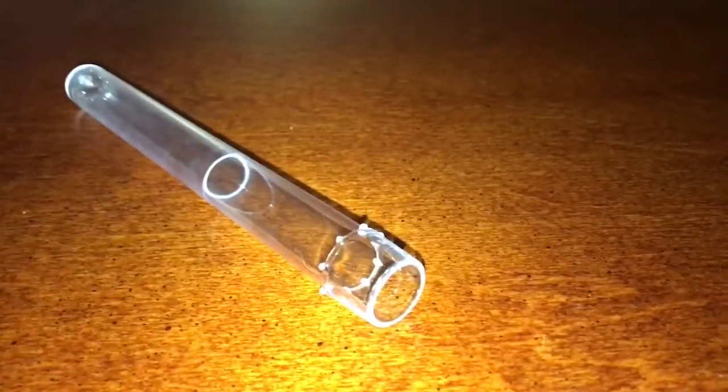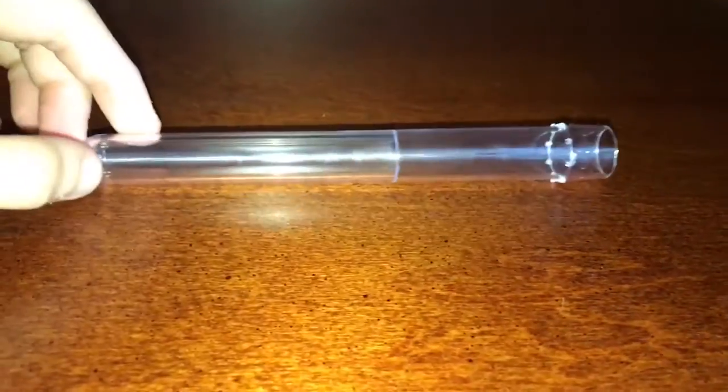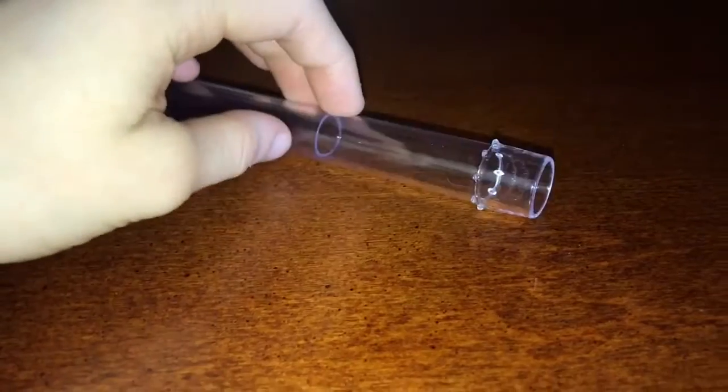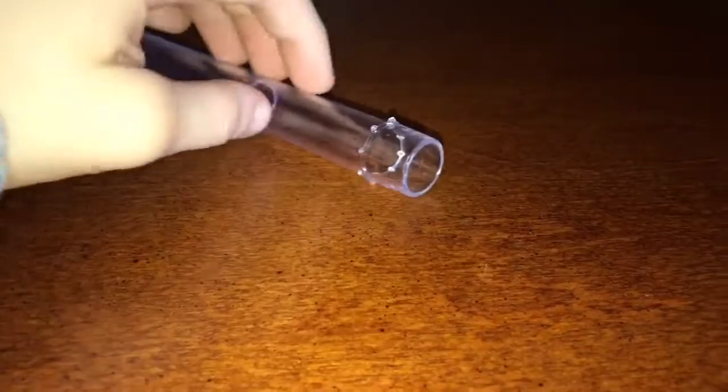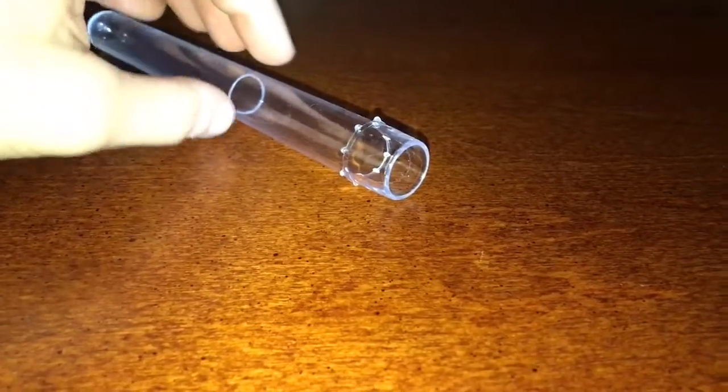The next item is the AC test tube. So, the new ones now have two things. This nice little line to tell you pretty much where to fill the water up to. As well as these things, so that it doesn't roll around very easily. It's more stable, so your queen doesn't get rolled around in there.